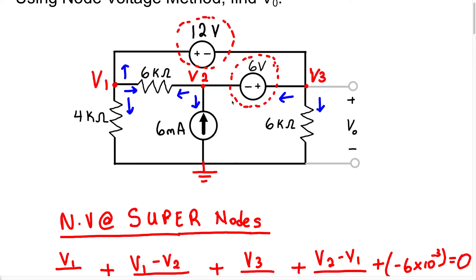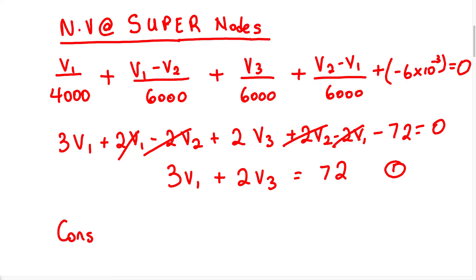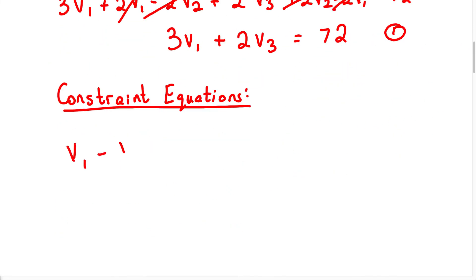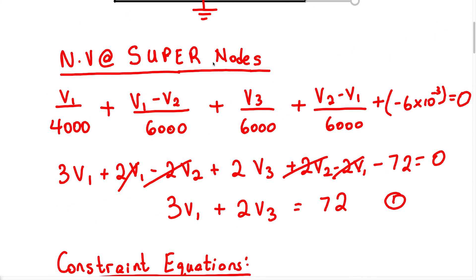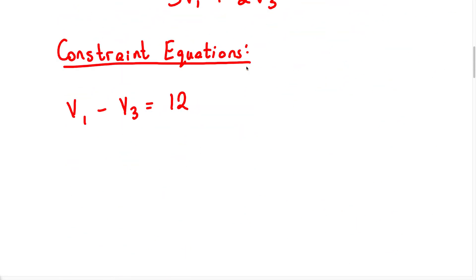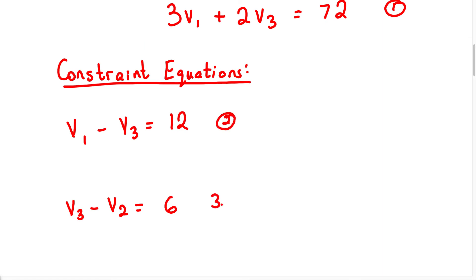Now we have to write the constraint equation for each voltage source. For the first voltage source, the constraint equation is V1 minus V3 equals 12 — that's Equation 2. For the second voltage source, we have V3 minus V2 equals 6 — that's Equation 3.